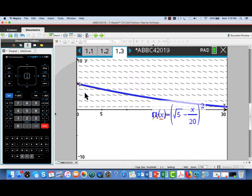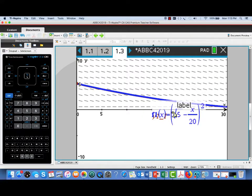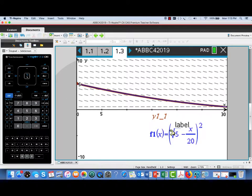It's also the one that the DE solve gave to us. And that was the square root of 5 minus x over 20 quantity squared. And notice that that is plotted just directly over the numerically generated solution curve. That's giving us at least some strong visual evidence that our solution makes sense.